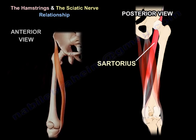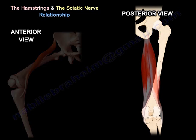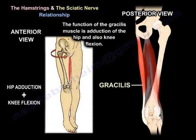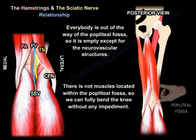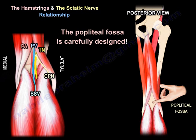The sartorius function is flexion of the knee and the hip, like a tailor. The gracilis function is adduction of the hip and also knee flexion. Everybody is out of the way of the popliteal fossa, so it is empty except for neurovascular structures — there is no muscle in the middle of the popliteal fossa, allowing us to fully bend the knee without any impediment. That popliteal fossa is carefully designed.